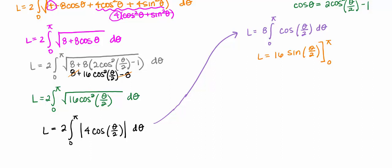So this should be 16 times sine of pi over 2 minus sine of zero. So my arc length should be 16 times 1 or just 16. That's a really nice arc length for what seemed like a pretty messy anti-derivative.